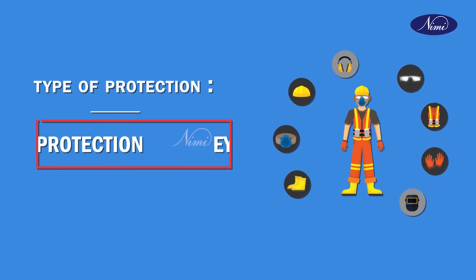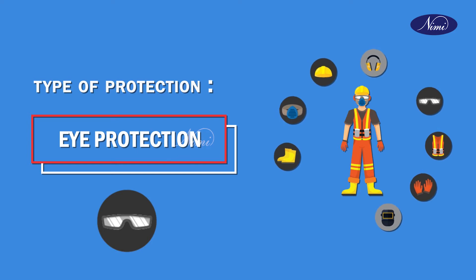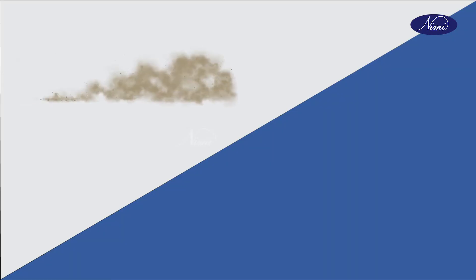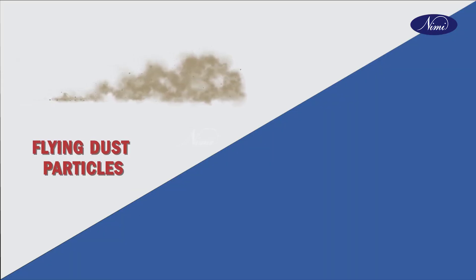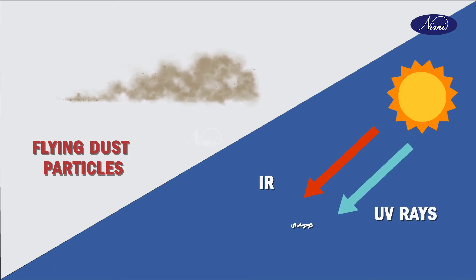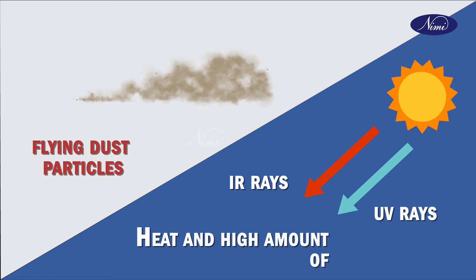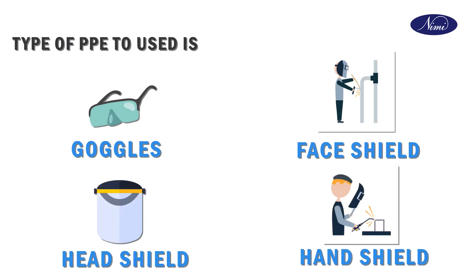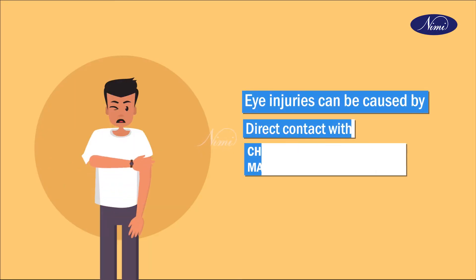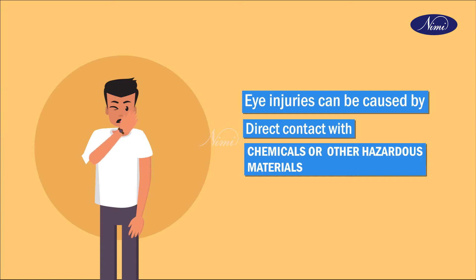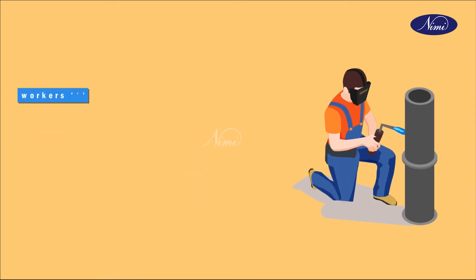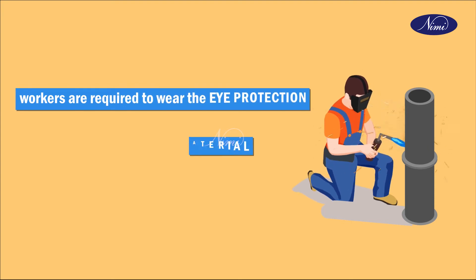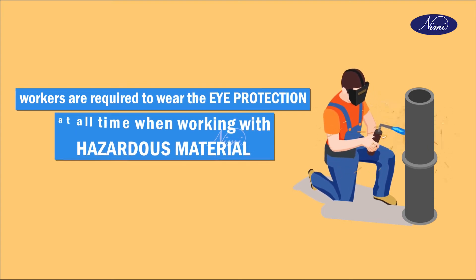The next type of protection is eye protection. The main hazards are flying dust particles, UV rays, IR rays, heat, and high amounts of visible radiation. The PPE to be used are goggles, face shield, head shield, or hand shield. Eye injuries can be caused by direct contact with chemicals or other hazardous materials. Workers are required to wear eye protection at all times when working with hazardous materials.